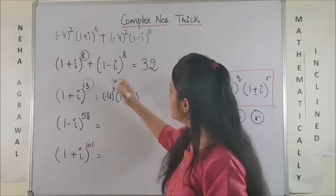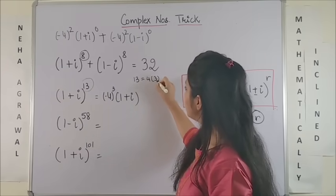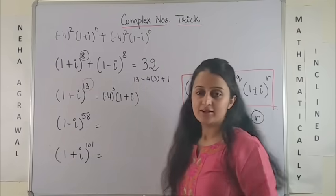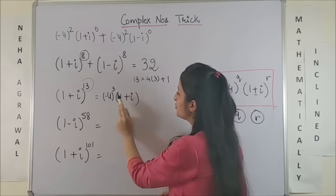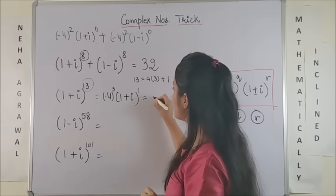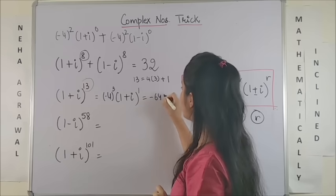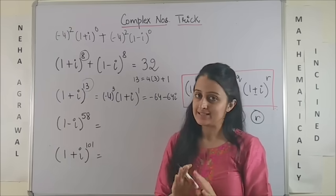Wasn't this so quick? Look at the second one now. Looking at 13, when I divide it with 4, we know we can write it as 4 into 3, and the remainder is 1. So we use it as minus 4 cube, 1 plus iota raised to power 1. So minus 4 cube is minus 64, minus 64 iota, that is the answer.